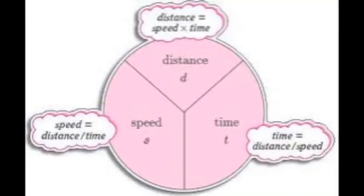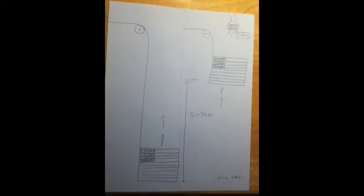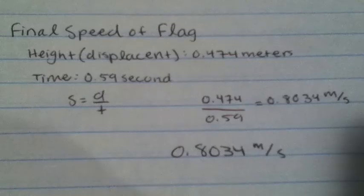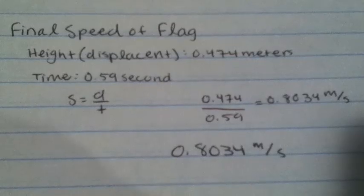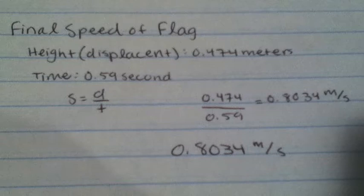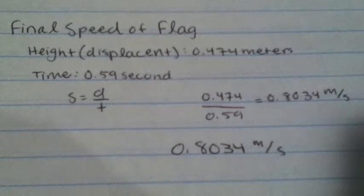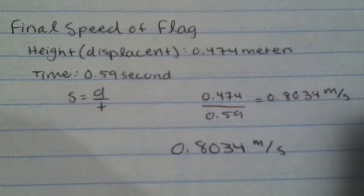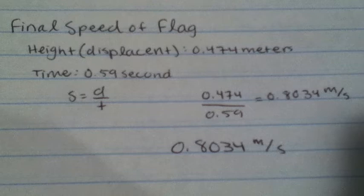Calculate the speed with which the flag is raised using speed equals the distance the flag travels divided by the time it takes the flag to go this distance. To calculate the speed with which the flag is raised, we used the equation distance over time. The distance of the displacement of the flag was 0.474 meters and the time it took to travel was 0.59 seconds. The final speed was calculated as 0.8034 meters per second.